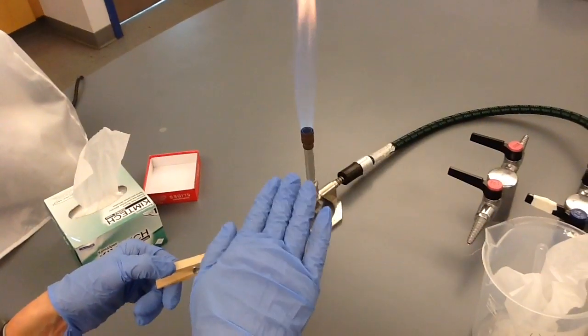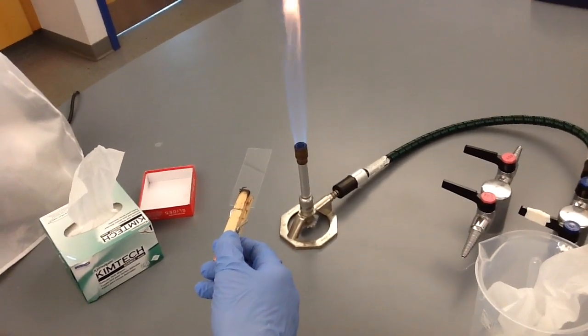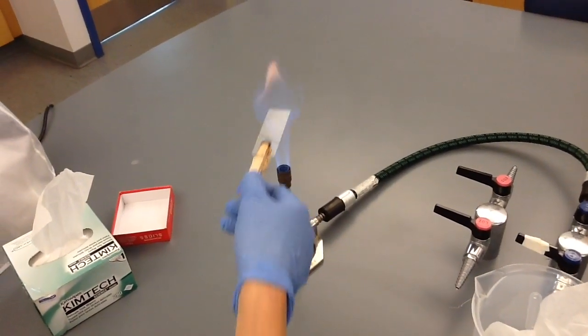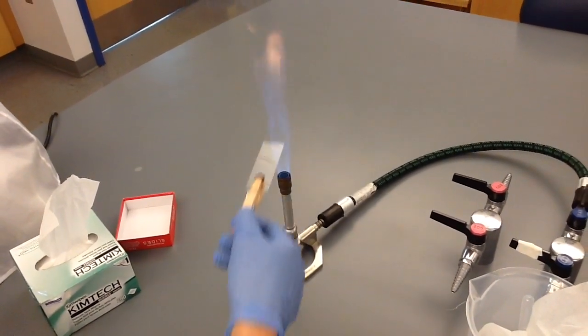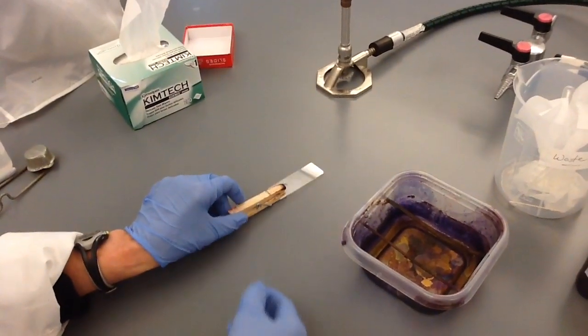The cells are on the top. You heat fix by passing back and forth through the flame two or three times relatively quickly. One, two, and three. That slide is very hot now so you set it down on the bench to cool for a few minutes.